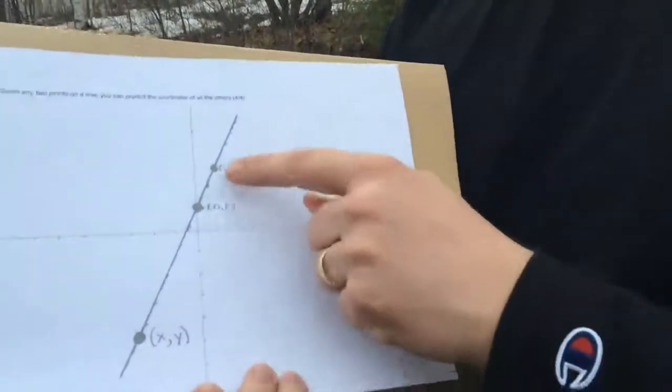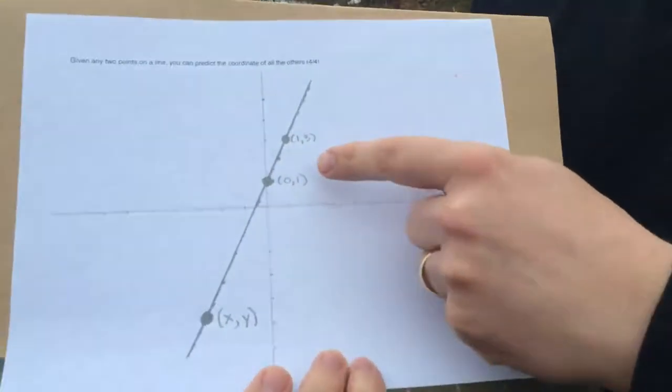You may have heard that two points define a line, and indeed it does. With two points you can derive the slope and the y-intercept, and then you have the entire line.